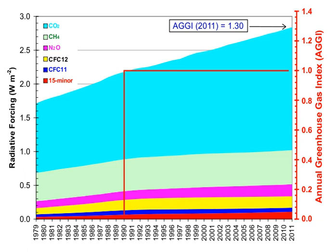Some gases have indirect radiative effects whether or not they are greenhouse gases themselves. This happens in two main ways. One way is when they break down in the atmosphere and produce another greenhouse gas. For example, methane and carbon monoxide are oxidized to give carbon dioxide, and methane oxidation also produces water vapor. Oxidation of CO to CO2 directly produces an unambiguous increase in radiative forcing, although the reason is subtle.